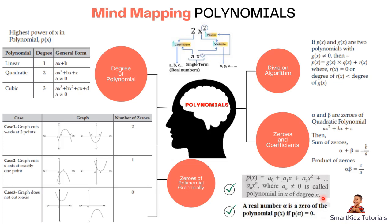Moving further from the general form, polynomials are given certain names depending on their degree. Looking at a table with three columns — type, degree, and general form — the first case where degree is 1 is known as a linear polynomial and its general form is ax + b. Let us recall what degree means before continuing further.